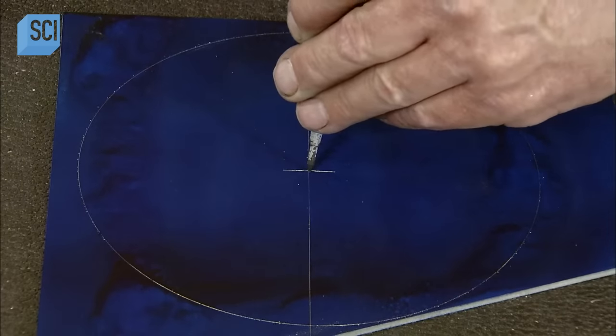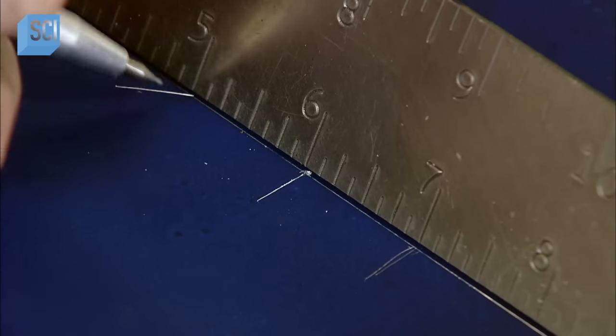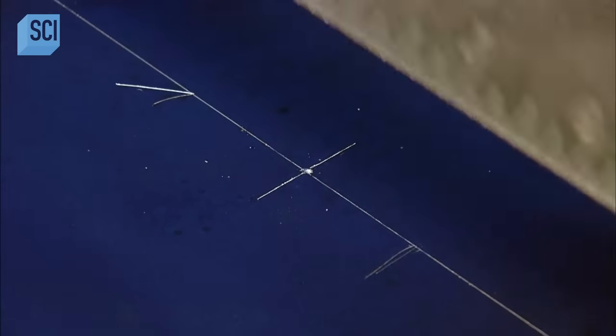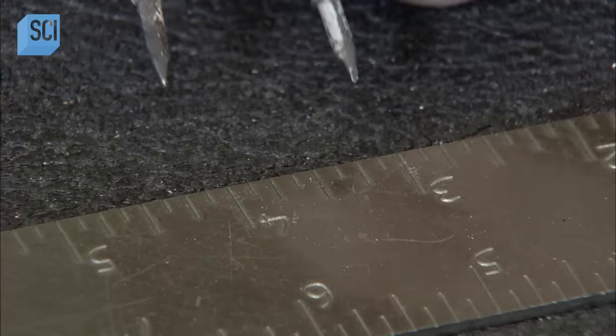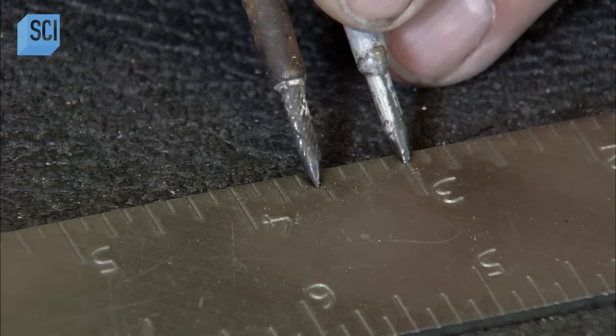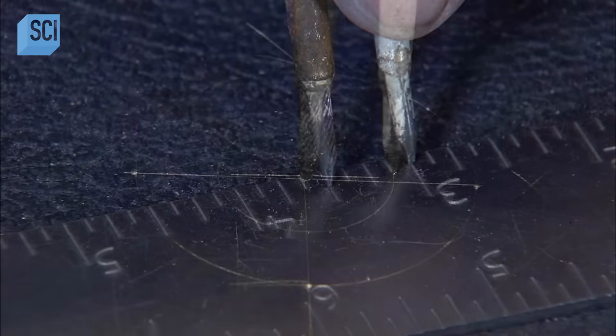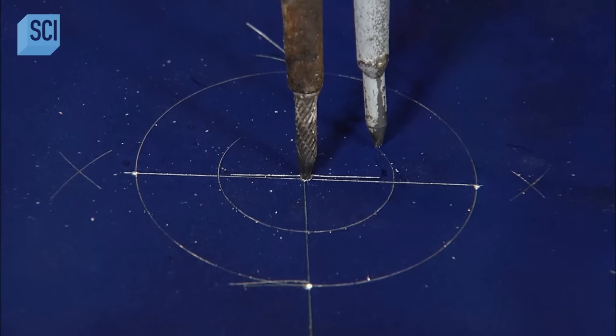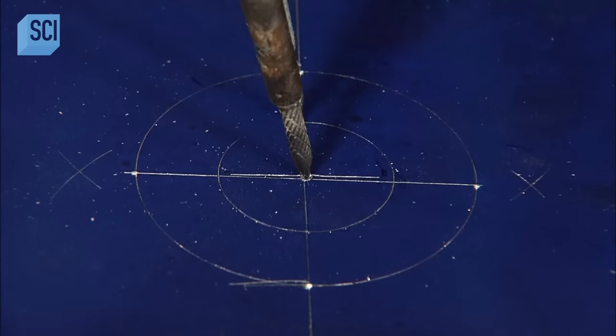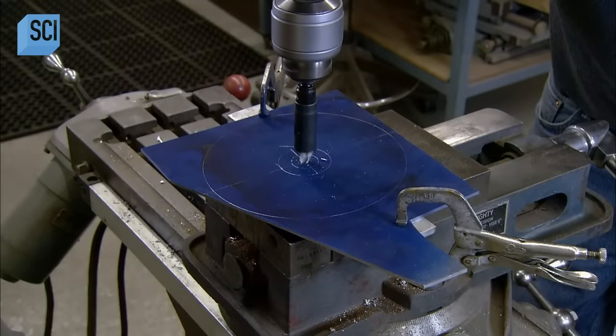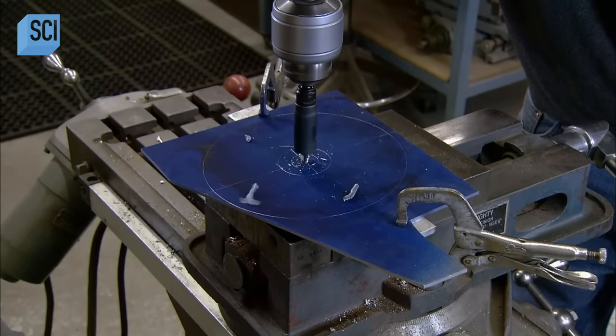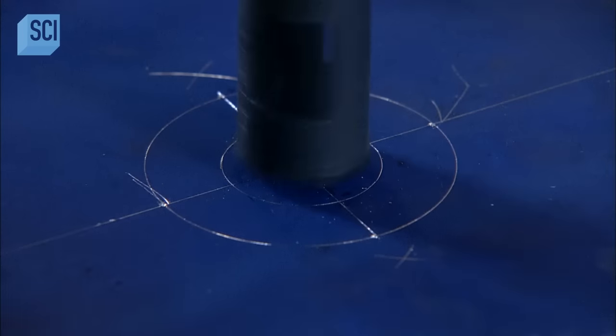The production of this lunar rover replica continues with the fabrication of a brake disc. The technician carefully measures the dimensions and draws them onto a sheet of plastic-covered aluminum. He drills a large hole for the main drive shaft and four screw holes.